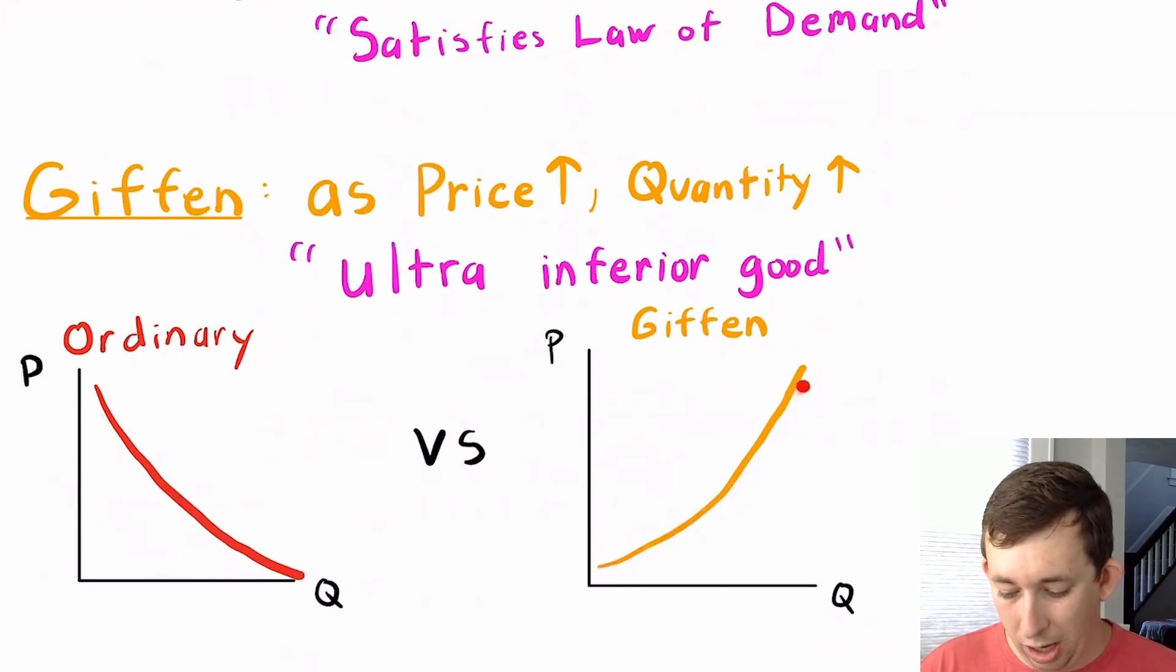For a Giffen good, it's the opposite. So it's gonna be upward sloping, which means that as the price goes up, quantity also goes up.